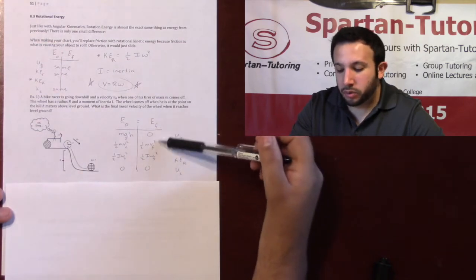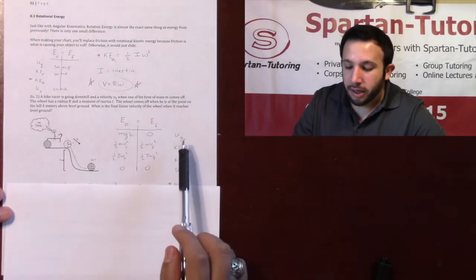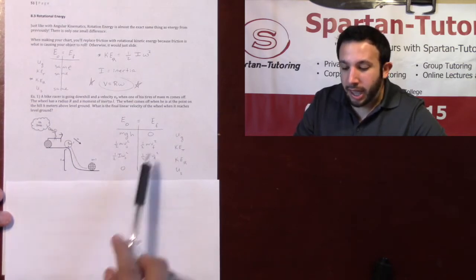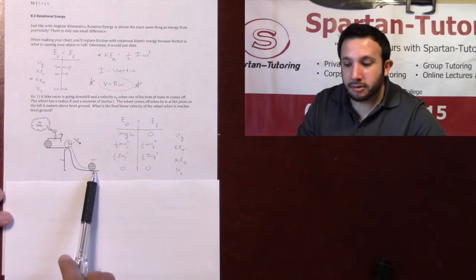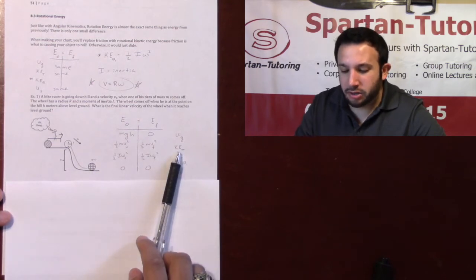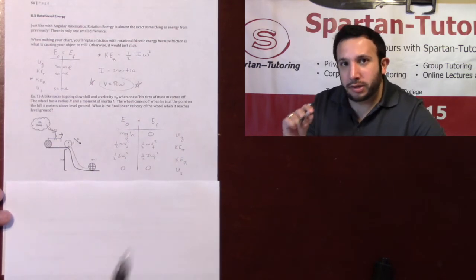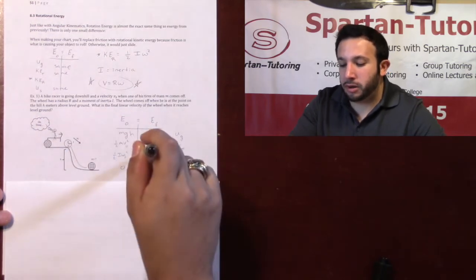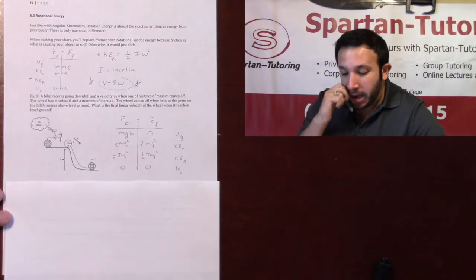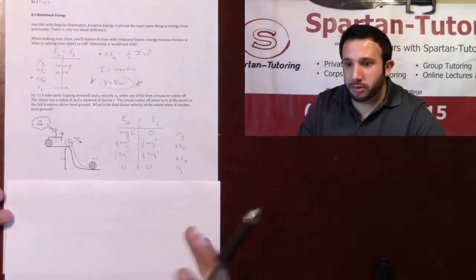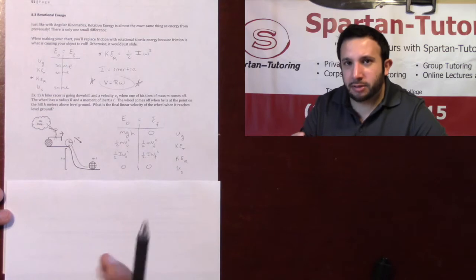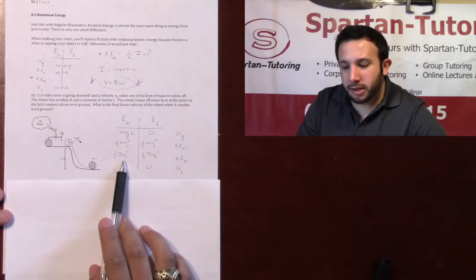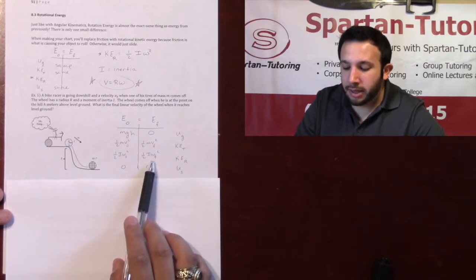And so once again, we're just going to set up our energy chart. I first start off with potential energy due to gravity. Initially, you're at MGH. And at the end, you're on the ground. As for translational kinetic energy, you are moving linearly both at the beginning and at the end. So it will be one-half MV0 squared and one-half MVF squared. In rotational kinetic energy, we are doing that, right? It is rotating at the beginning, and it is rotating at the end. So you have one-half I omega naught squared and one-half I omega F squared.